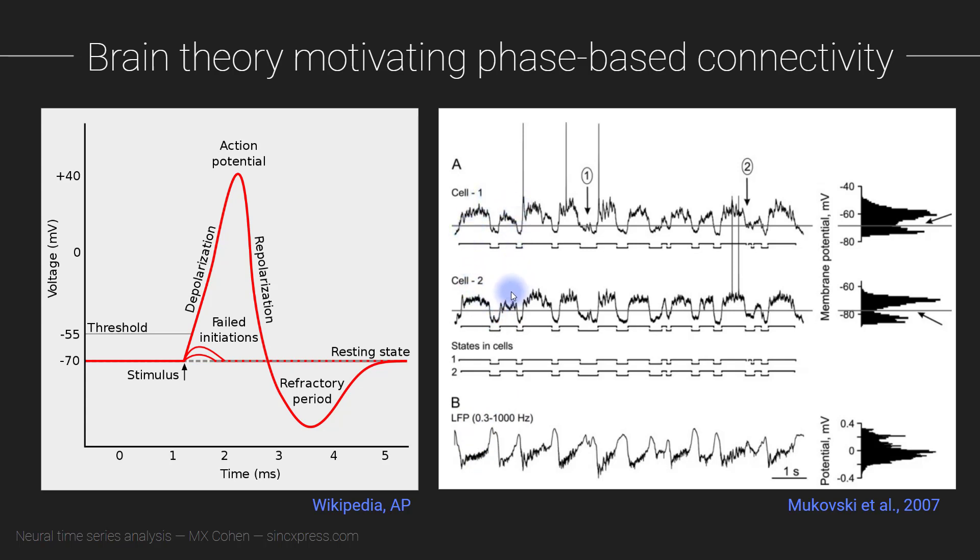Okay, now these recordings here are taken from deep sleep. Now, it's not always the case that you see such stark differences between these what are called up states and down states. This sharp distinction between up states and down states is generally what you see during deep sleep and anesthesia and other conditions like that where your brain isn't really conscious and actively doing something.